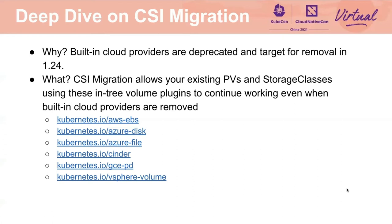Right now, all of the major cloud provider plugins have beta support for CSI migration, including AWS EBS, Azure Disk and File, OpenStack Cinder, GCE PD, and vSphere volumes. All of these plugins are expected to GA their CSI migration implementations starting in 1.24.